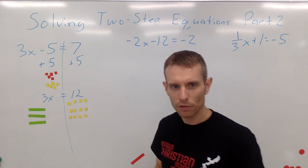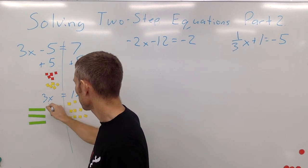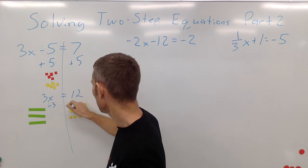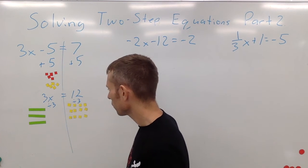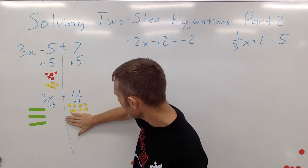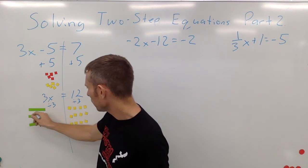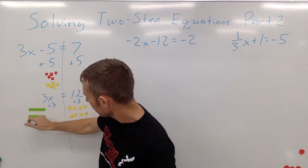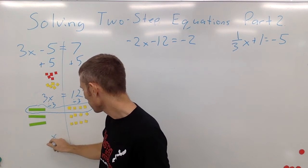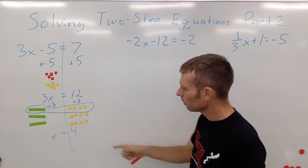We still need to find x. We divide both sides by 3, since the inverse operation of times 3 is divided by 3. So 3x divided by 3 gives us x, and 12 divided by 3 gives us 4. We divided both sides into thirds, so x equals 4.